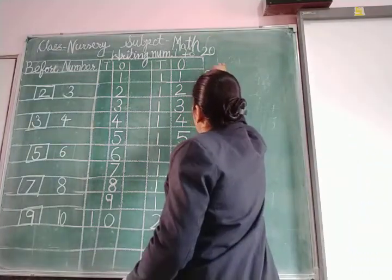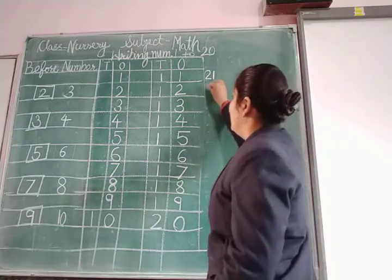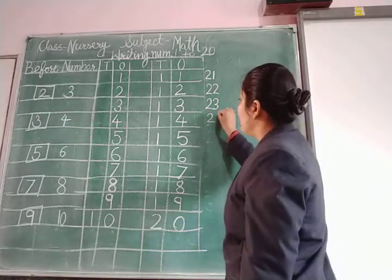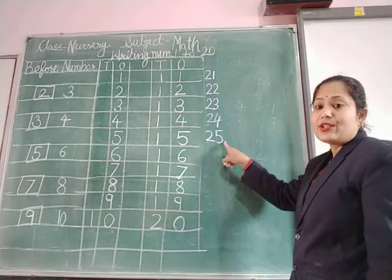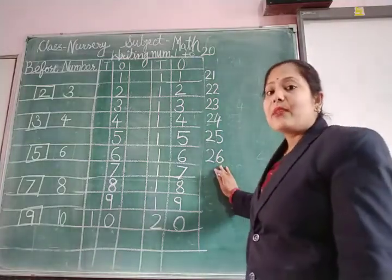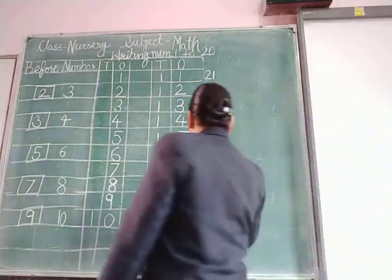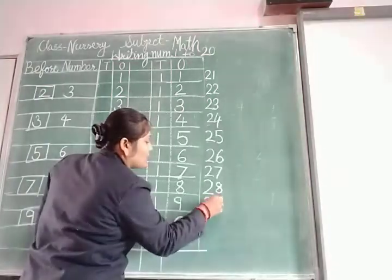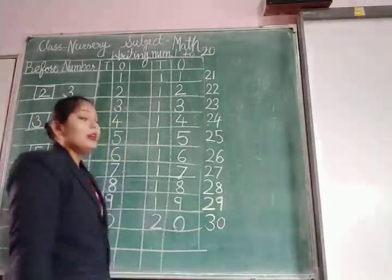21. Yeh aapko likhna nahi hai — this is your oral part. 21, 22, 23, 24, 25, 26, 27, 28, 29, 30.